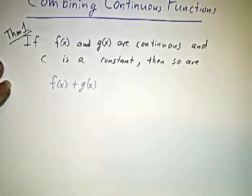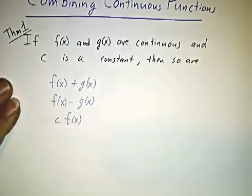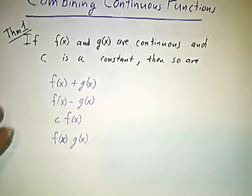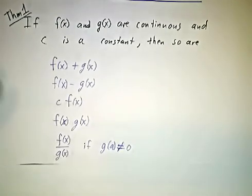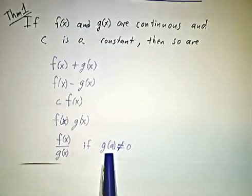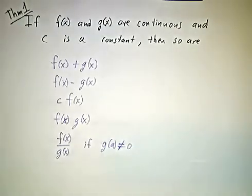We could add the first two functions, we could take their difference, we could multiply by a constant, we could take their product, or we could take the ratio. And of course if you take the ratio you have to worry about dividing by zero, you have to make sure that you're not actually dividing by zero. The claim is that those are all continuous.